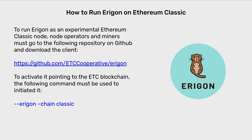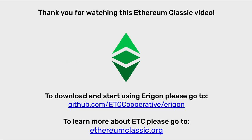How to run Eragon on Ethereum Classic. To run Eragon as an experimental Ethereum Classic node, node operators and miners must go to the following repository on GitHub and download the client: https://github.com/etc-cooperative/eragon. To activate it pointing to the ETC blockchain, the following command must be used: --eragon --chain classic. To learn more about ETC, please go to ethereumclassic.org. Thank you very much.